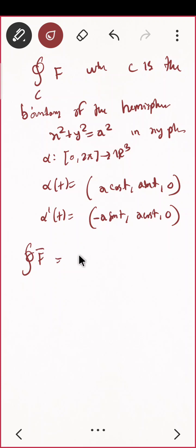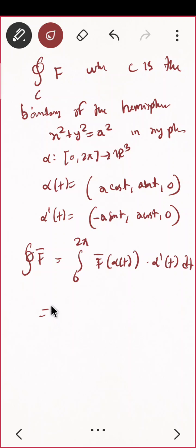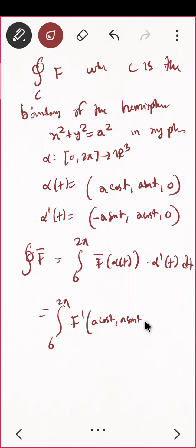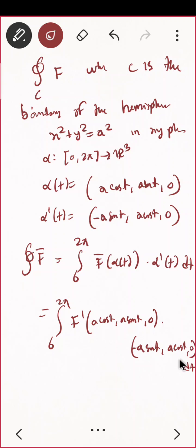The line integral is the integral from 0 to 2pi of F-cap(alpha(t)) dot alpha'(t) dt. Substituting alpha(t) = (e cos t, e sin t, 0) into F and dotting with alpha'(t) = (-e sin t, e cos t, 0) gives terms involving sin(t)cos(t).